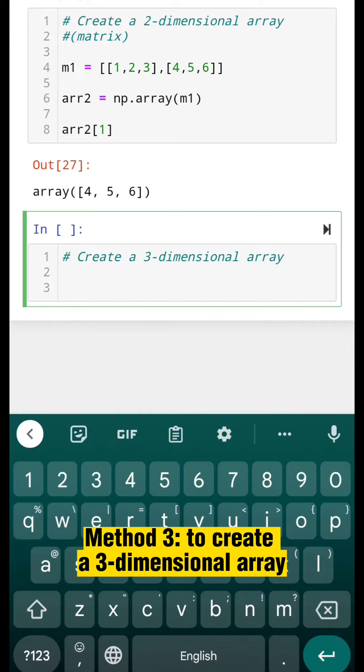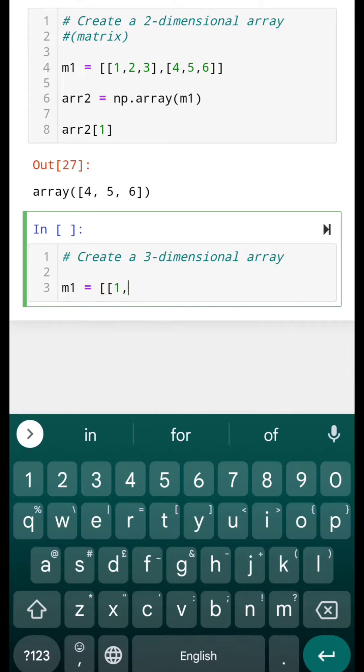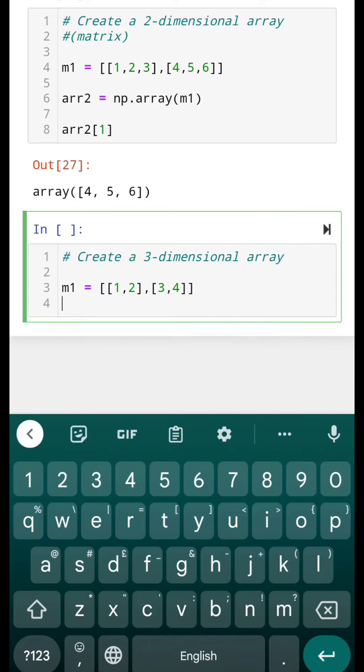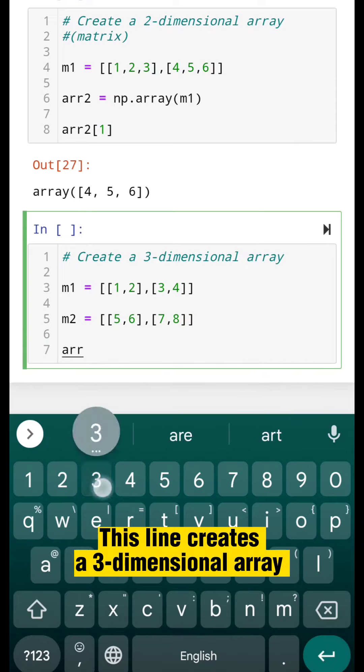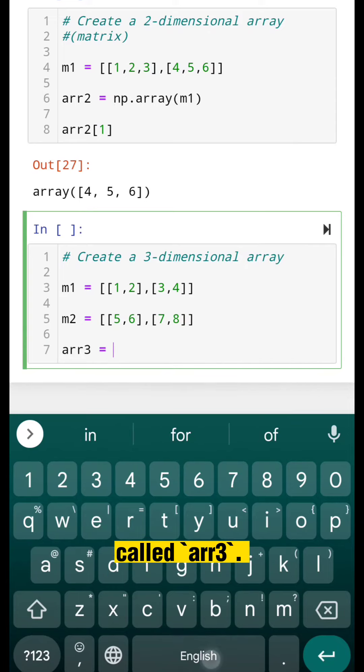Method 3: to create a three-dimensional array. This line creates a three-dimensional array called arr3.